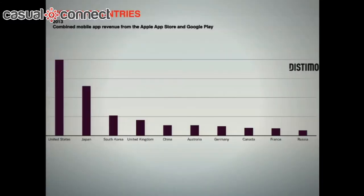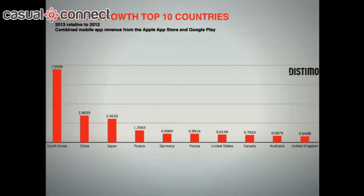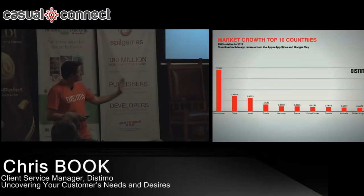I just want to quickly give you a couple of minutes on some market stats from 2013. This is total revenue from Google Play and from the Apple store. You can see which countries dominate in terms of revenue — the US is still way ahead, being caught up fast by Japan and South Korea. The rest of the countries are kind of dwarfed by the US opportunity. What's interesting is the change in revenue between 2012 and 2013: Asia is where the growth is coming from, with South Korea and Japan growing very fast. That China number is just based on iOS because we don't have Google Play in China.